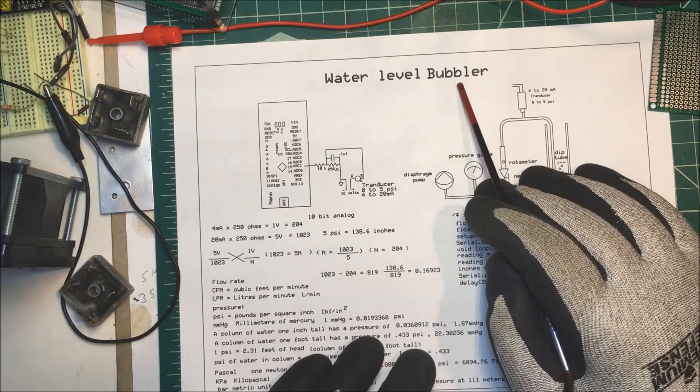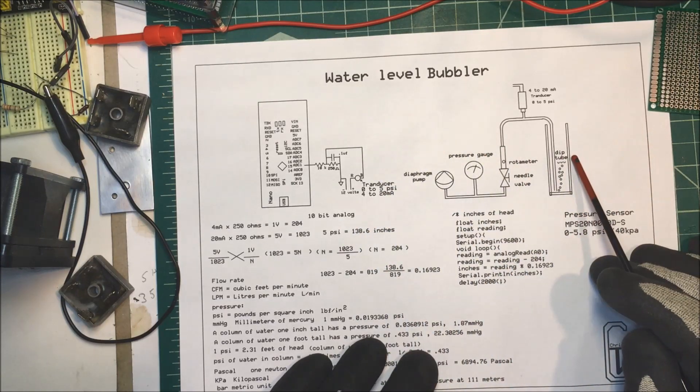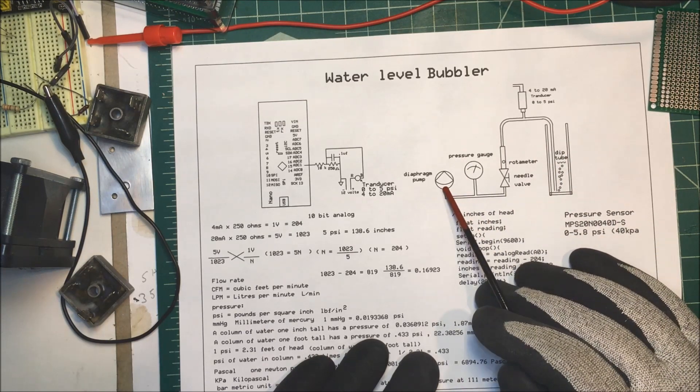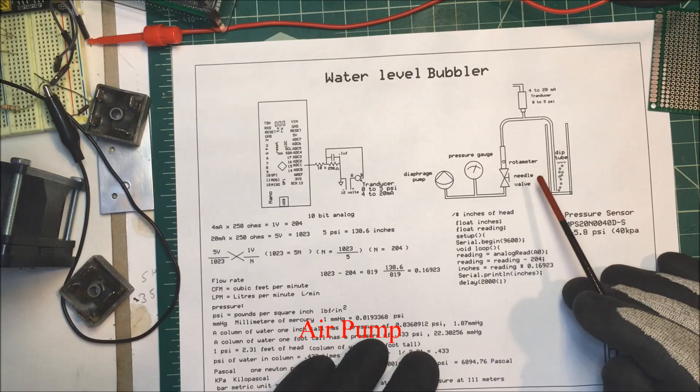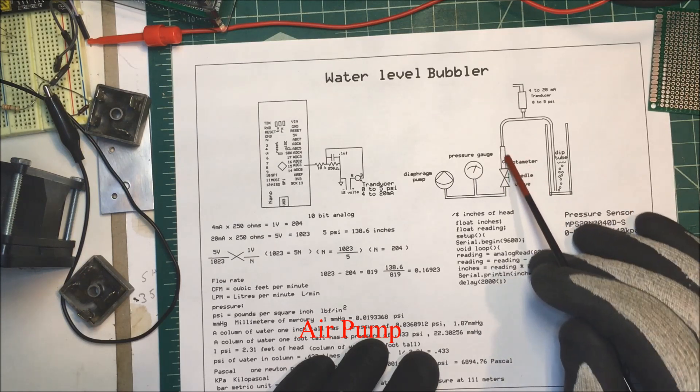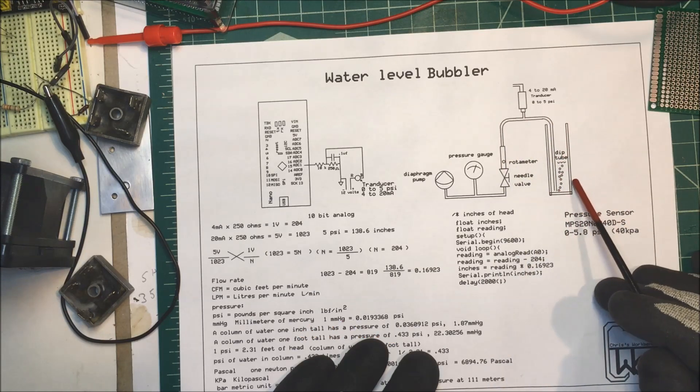Let's take a look at a bubbler system. We're going to use it to determine the water level, whether it's in a well or in a tank. In order to do that, we just have a pump and then a pressure gauge. We have a needle valve and a rotometer here that we can control the flow of air into this dip tube down in here.